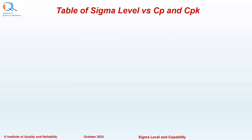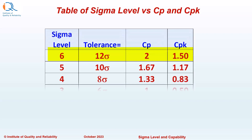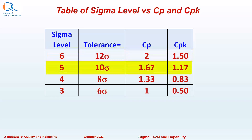We can summarize the values of Sigma Level versus CP and CPK in a table. For a Sigma level of 6, CP is 2 and CPK is 1.5. For Sigma level of 5, CP is 1.67 and CPK is 1.17. For Sigma level of 4, CP is 1.33 and CPK is 0.83. For Sigma level of 3, CP is 1 and CPK is 0.5.